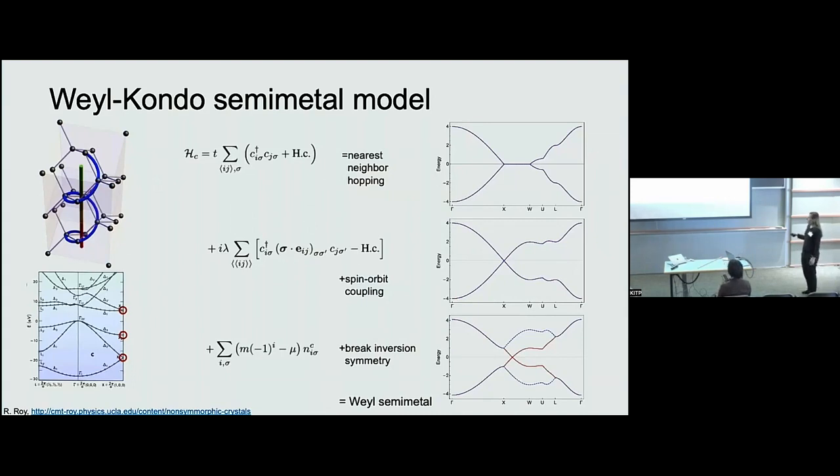And then finally, we break inversion symmetry with this onsite term, which basically differentiates the A and B sub lattices that make up diamond lattice, transforming it into what's commonly called the zinc blende lattice. And with that broken inversion symmetry, we can realize a Weyl semi metal. So this is all the itinerant, just the itinerant electron case.